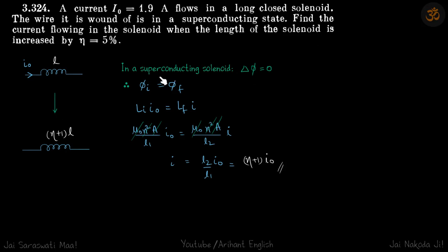ΔΦ in a superconducting solenoid is zero, which means initial flux equals final flux. Initial flux through it is Lᵢ·I₀, and final is Lf·I. Inductance will change because the length has changed.